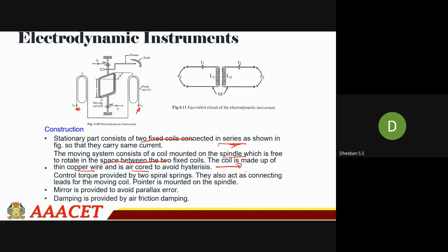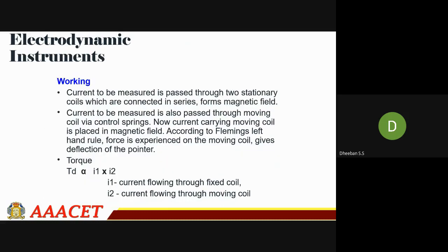The control torque is always provided by the spring control mechanism. A mirror is provided for parallax avoidance and damping is by air friction. The current to be measured is passed through the stationary coil, forming the magnetic field. Importantly, current is also passed through the moving coil via the control springs — unlike previous cases, the control springs here have an active role in carrying current. The current-carrying moving coil is placed in the magnetic field, and applying Fleming's left-hand rule gives the force.